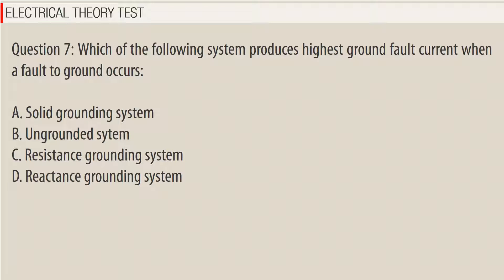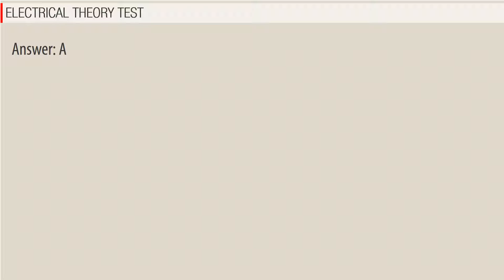Question 7: Which of the following systems produces the highest ground fault current when a fault to ground occurs? A. Solid grounding system, B. Ungrounded system, C. Resistance grounding system, D. Reactance grounding system. Answer: A.